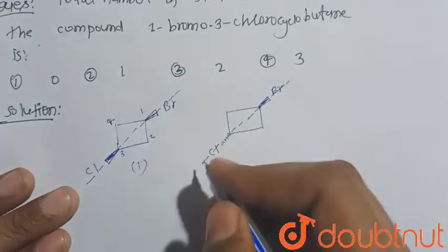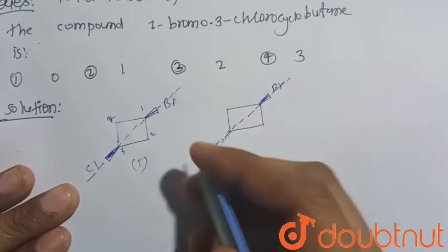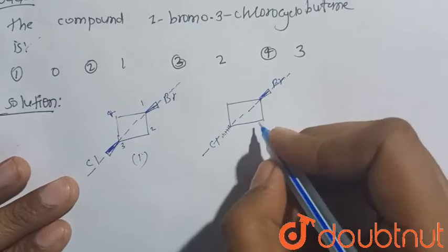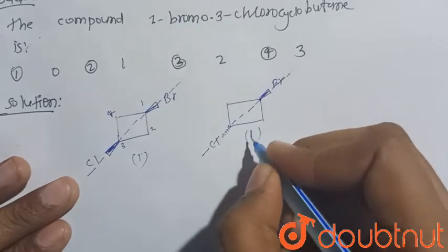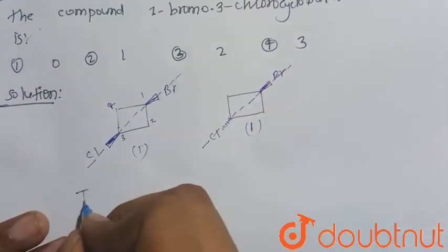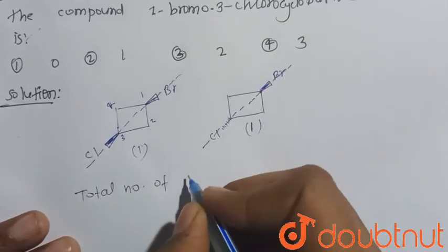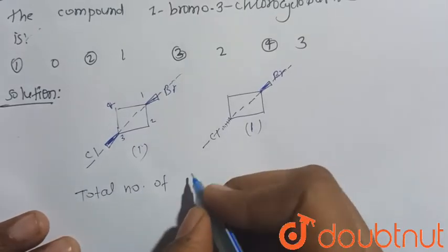Now consider this one - because it is optically inactive, this also has a plane of symmetry. This also we consider only one, not its mirror image. So total number of stereoisomers of this compound 1-bromo-3-chlorocyclobutane will be equal to 1 plus 1 is equal to 2.